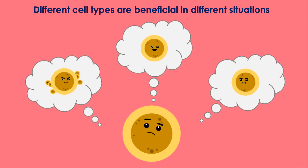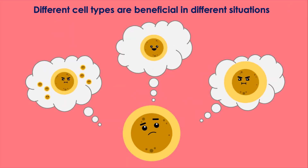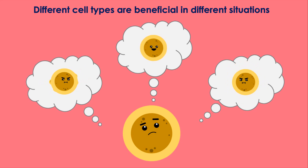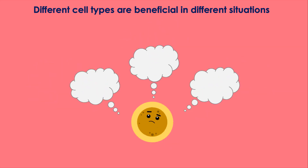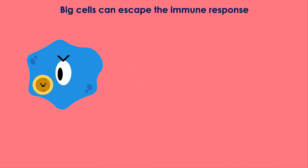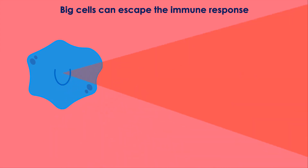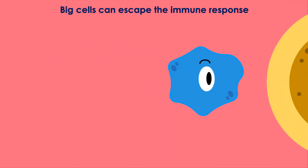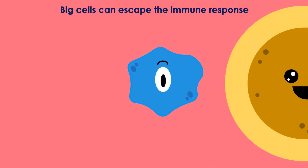My results suggest that different cell types may be beneficial to the organism in different situations. Cells big enough to escape being engulfed by the immune response were more common in early infection, and may be beneficial as they allow the organism to persist inside the body.